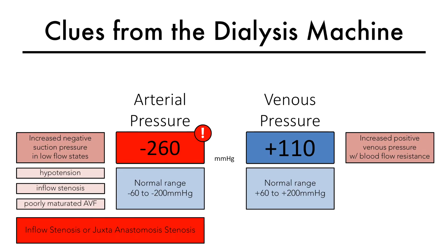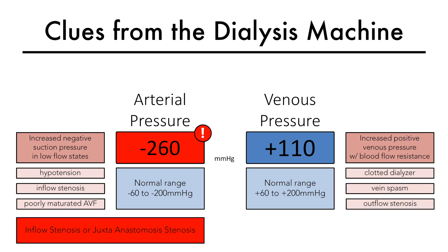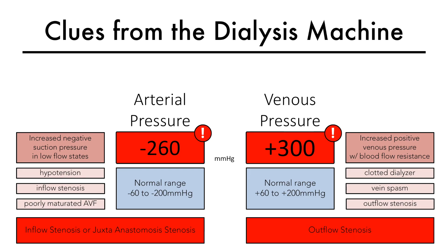Elevated venous pressure can be seen in cases of a clotted dialyzer, vein spasm, or a venous outflow stenosis. Dynamic venous pressures should be measured at the start of dialysis with blood flows of 200 mils per minute. A consistent rise, measured over at least three treatments, may be suggestive of a venous stenosis.